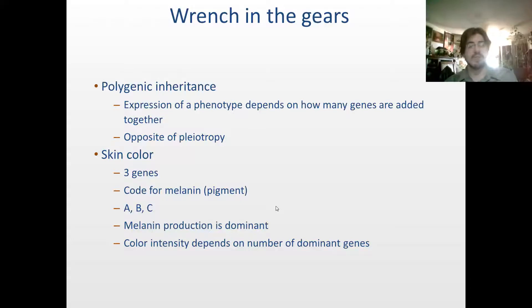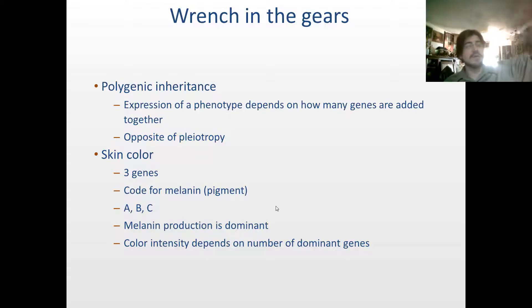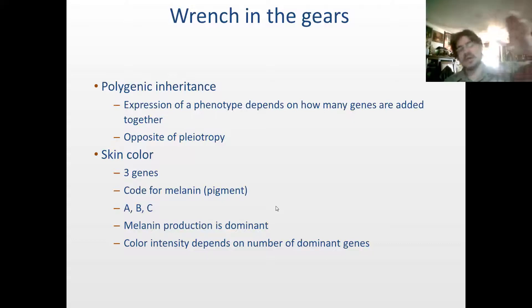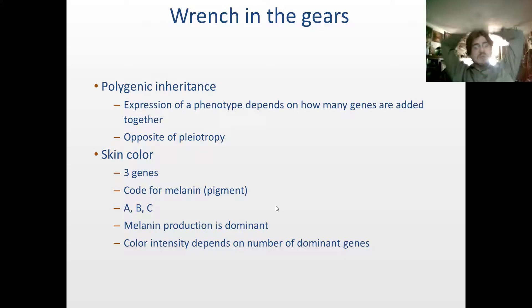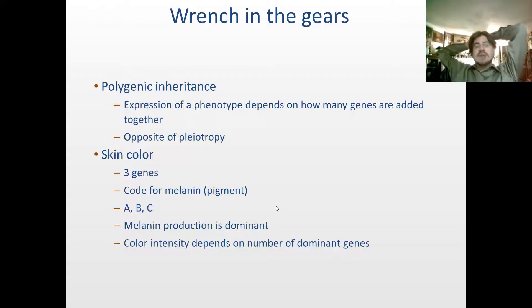They need to be able to absorb more light. So you see this gradual change in skin color based on your latitude, whether you're north or south. If you're at the poles, you're going to see people with the lightest skin colors, and as you move towards the equator, skin color gradually gets darker. That's purely due to the interplay between ultraviolet radiation and vitamin D production, governed by three genes that code for melanin.